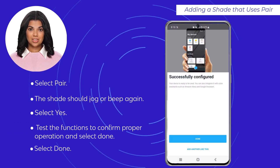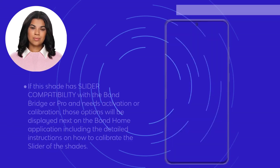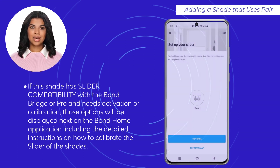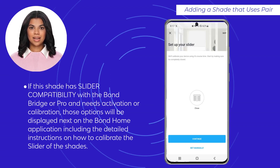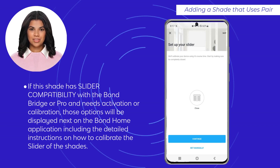Select Done. If this shade has slider compatibility with the Bond Bridge or Pro and needs activation or calibration, those options will be displayed next on the Bond Home application, including detailed instructions on how to calibrate the slider of the shades.